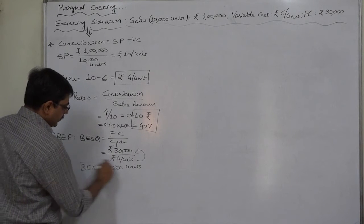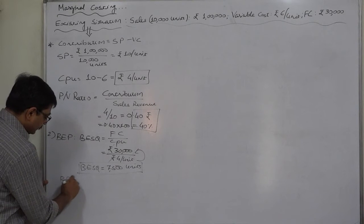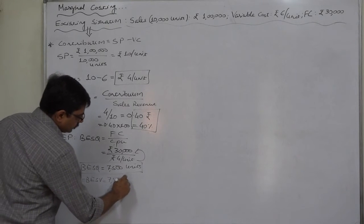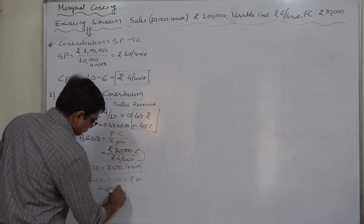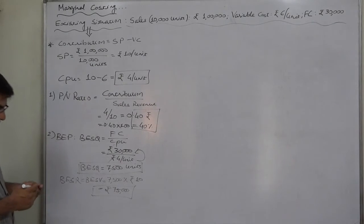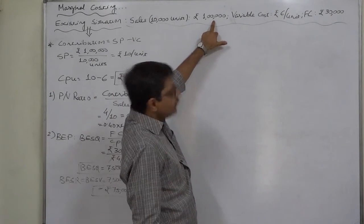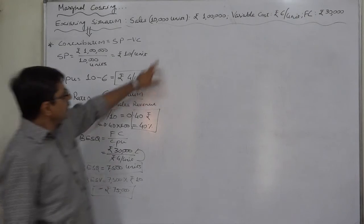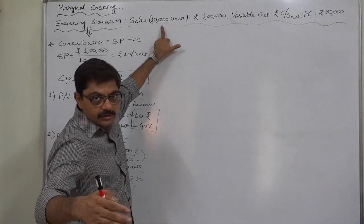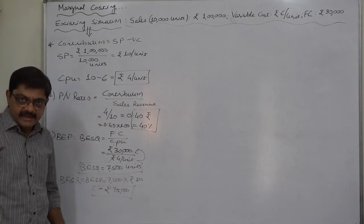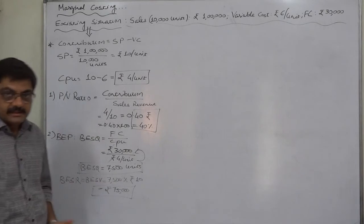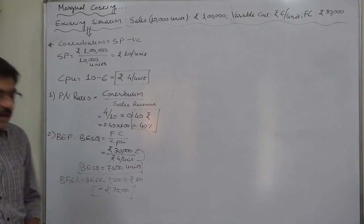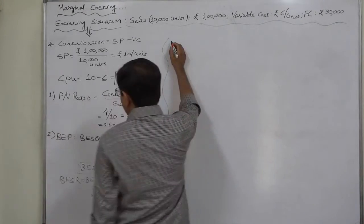If we want to know the break-even sales revenue, multiply the break-even sales quantity by the selling price: 7,500 units into rupees 10 equals rupees 75,000. So rupees 75,000 out of the existing sales of rupees 1 lakh is enough to reach the break-even point. The remaining 2,500 units or rupees 25,000 of sales is known as margin of safety.